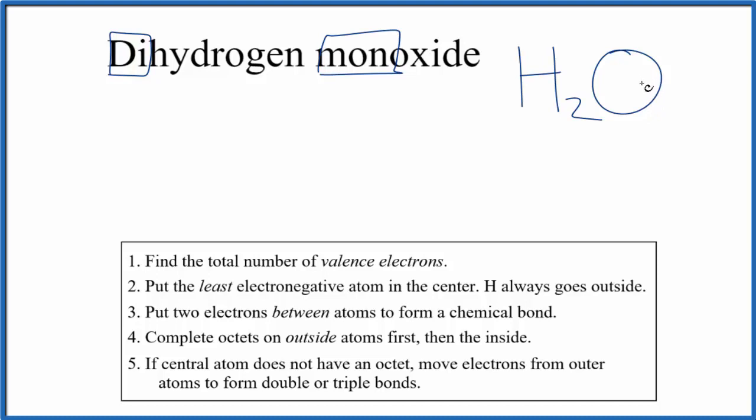And you might recognize this compound as H2O, water. So really we're just drawing the Lewis structure for water here. Dihydrogen monoxide is a systematic name, but it's really not used very much. Most often in chemistry, water is what we use for H2O. But let's draw the Lewis structure.